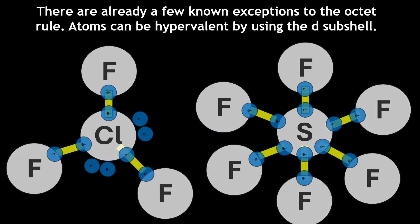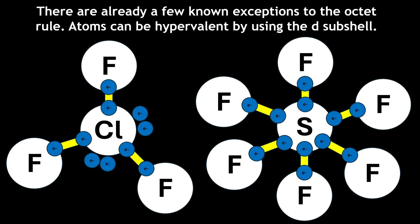Compounds such as chlorine trifluoride and sulfur hexafluoride have central atoms with five and six electron pairs, giving them 10 and 12 electrons respectively.